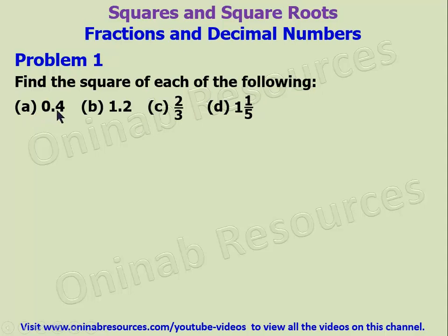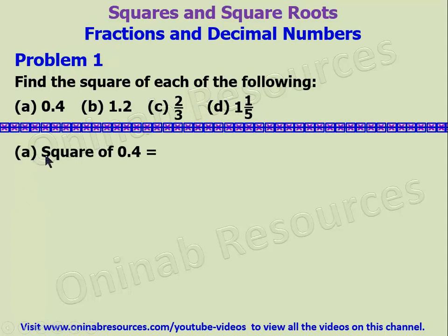A: 0.4, B: 1.2, C: 2 over 3, and D: 1 whole number 1 over 5. We start with A.